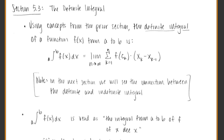Looking at our notation on the left, we normally see the integral sign as is, but now we add the values A to B — like finding the Riemann sum over the interval from 0 to 1, or from negative pi to pi. The definite integral means we're going to get a definite answer — an actual number like 1 or negative 14, not just a function.